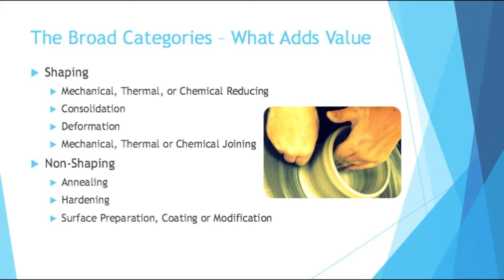Where there's shaping, there's also non-shaping. Non-shaping consists of annealing, which is heating a material up to change its crystalline structure; hardening, which makes something harder; and surface preparation, coating, or modification.